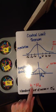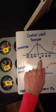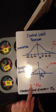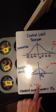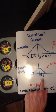Additionally, the mean of the population represented by this Greek symbol μ (mu) will be equal to the mean of our sampling distribution.